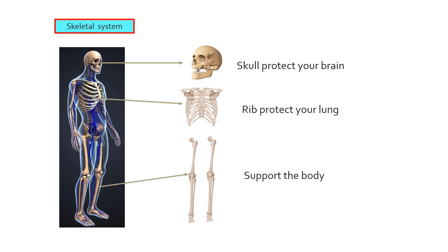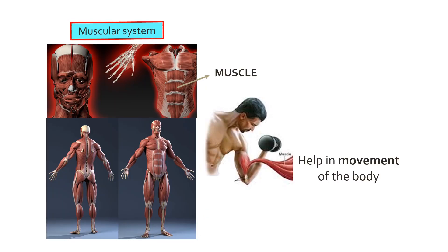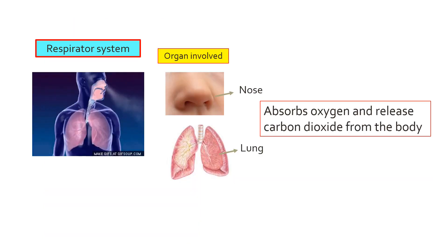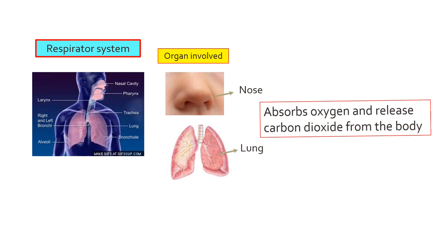Skeletal system: protects your brain and lungs and supports your body. Muscular system: helps in movement of the body. Respiratory system: organs involved are the nose and lungs; absorbs oxygen and releases carbon dioxide from the body.